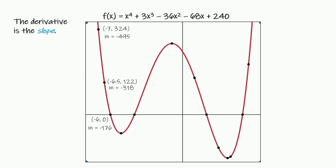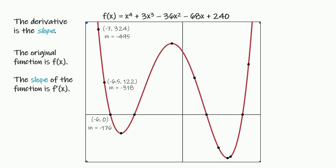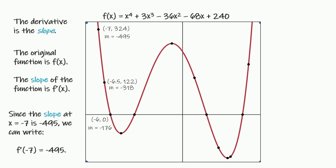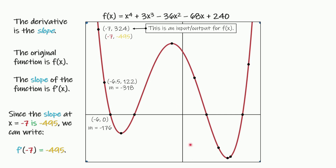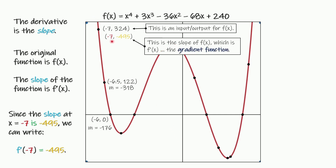A derivative is how you find the slope. The original function is f of x, and the slope of f of x is called f prime of x — that's what that little notation means. So since the slope at negative 7 is negative 495, when x is negative 7 we know the slope is this. The derivative f prime gives us the slope at the input of negative 7. At negative 7, the slope is negative 495. So the thing on the top — negative 7 and 324 — that's the input and output for the function. And the thing on the bottom is the slope of the function at x equals negative 7.